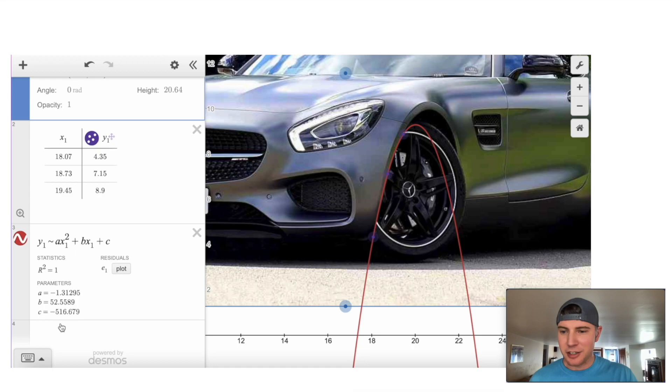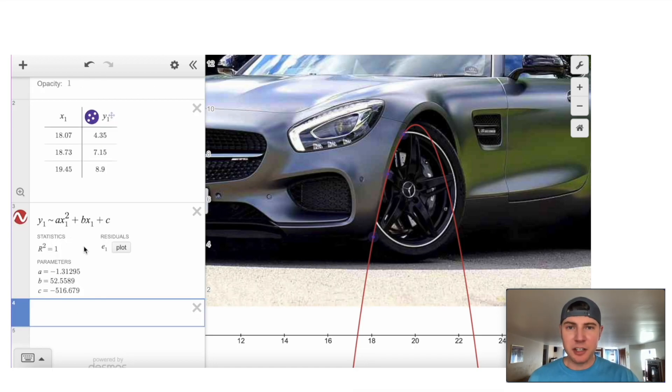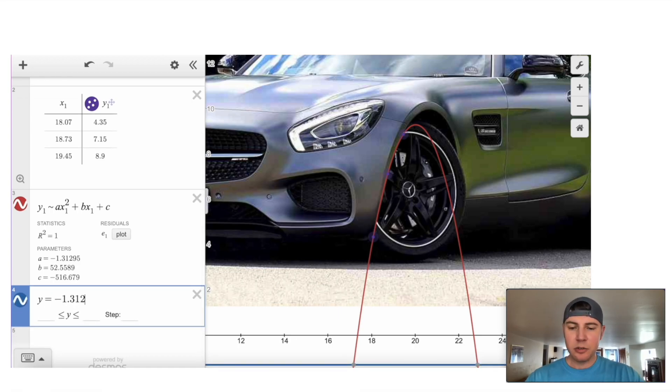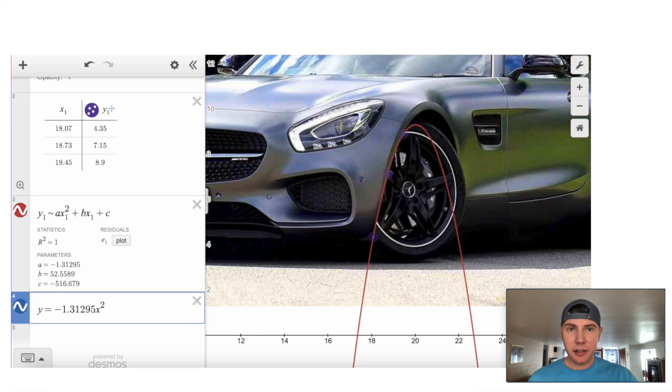Now we're going to copy this equation, but we're not going to do this y sub 1. This was just for the regression. We're just going to do y equals. Instead of a, we're going to plug in negative 1.31295. And then we're just going to say x squared plus 52.5589x minus 516.679. And now you can see that this blue one was exactly the red one.